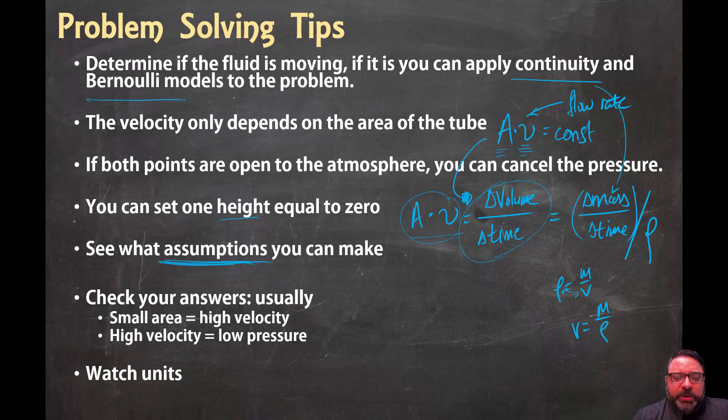And when you're done, it's always good to check your answers in these cases. Remember, if you have a small area tube, if the area gets smaller, usually your velocity is going to go up. So you can check that, make sure it goes up, make sure you didn't make a mistake. Areas that have high velocities usually have low pressures as well. And also watch your units.